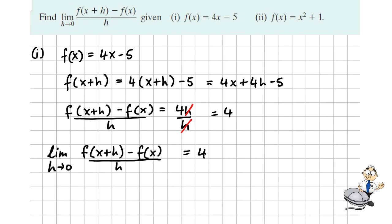Basically the limit as 4. But since 4 doesn't contain h, it's not affected by h. So the answer is just 4. This limit is equal to the derivative of f of x. So f dash of x is 4.